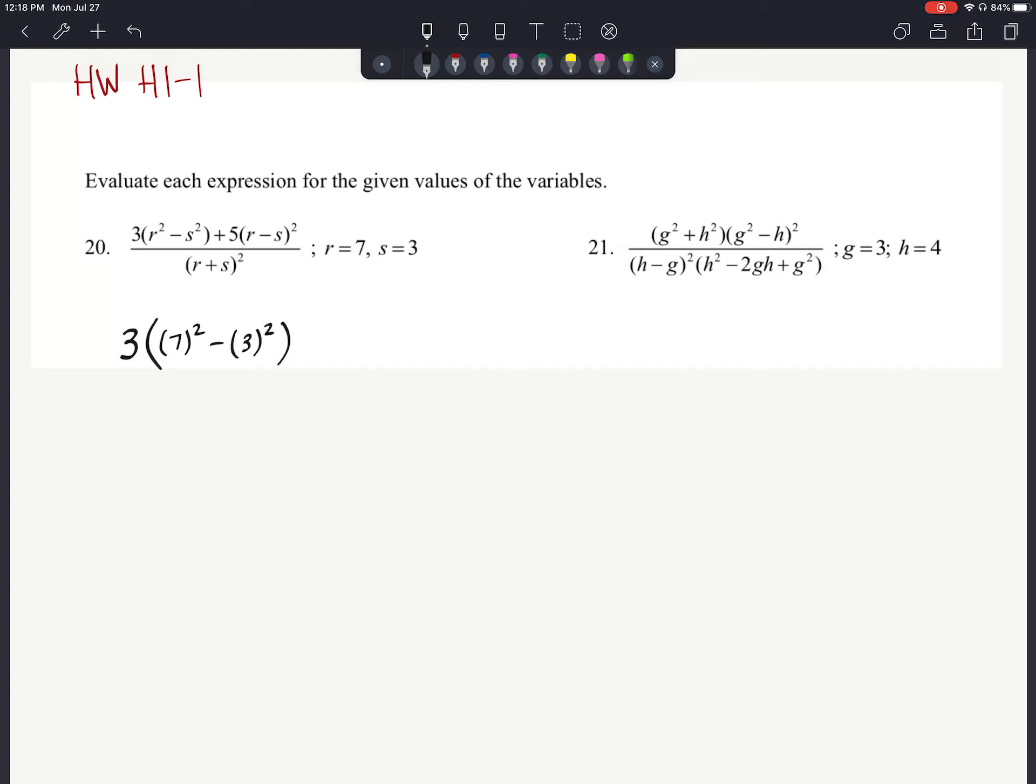So let's take our time here and simplify everything down. Starting in this first set of parentheses here where we've got 3 squared plus 4 squared. Well, we know that this is really 9 and this is really 16. So we have a 9 plus 16, which should give us a 25.